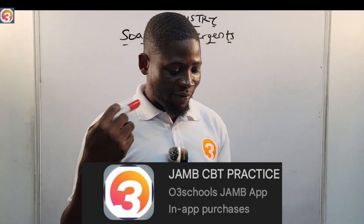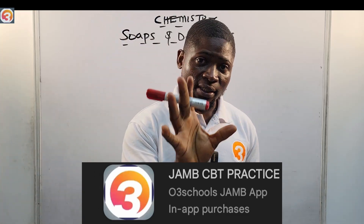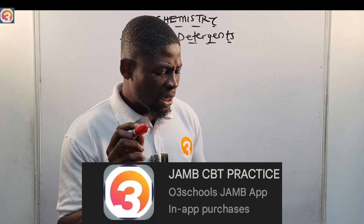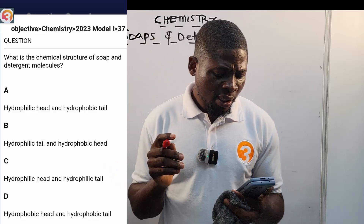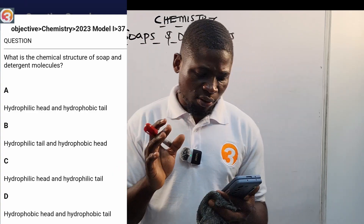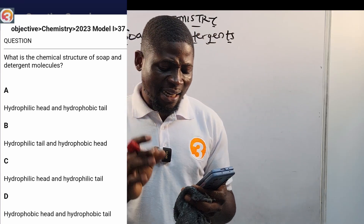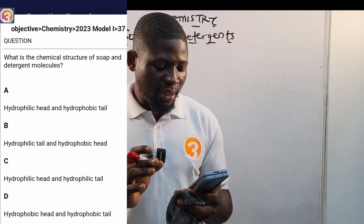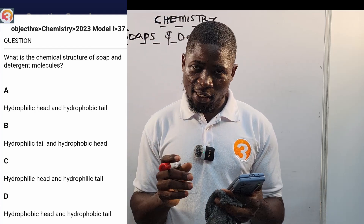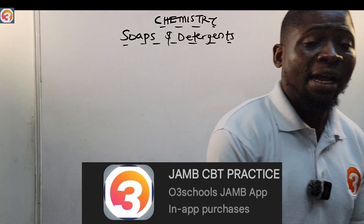Soaps and detergents — these are not new things; these are what we use every day. This tutorial is brought to you by the Olodo app. Here's a question from the app, 2023 number 37: what is the chemical structure of soap and detergent molecules? A: hydrophilic head and hydrophobic tail. B: hydrophilic tail and hydrophobic head. C: hydrophilic head and hydrophilic tail. D: hydrophobic head and hydrophobic tail.